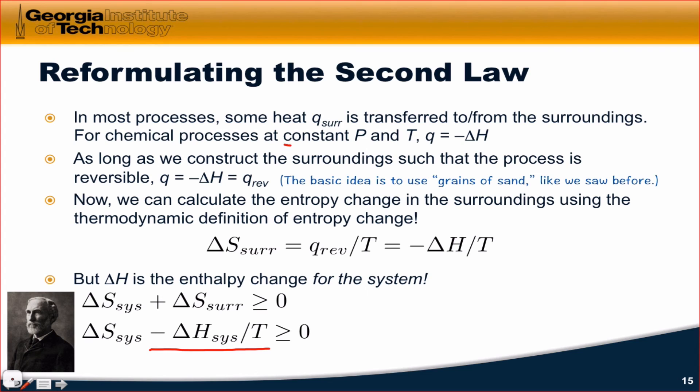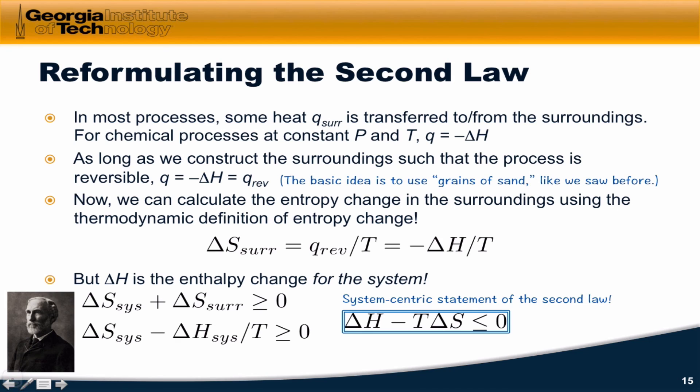Remember, we're assuming that the reaction is taking place at constant pressure and temperature, which is very typical for chemical reactions. Room temperature and atmospheric pressure are the norm. If we multiply through by the temperature and multiply through by negative 1, we arrive at this expression for the second law: delta H minus the temperature times delta S is less than or equal to 0.